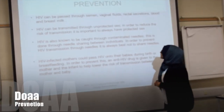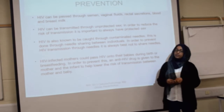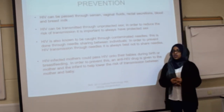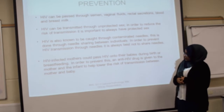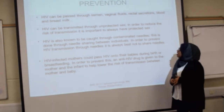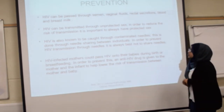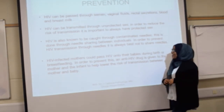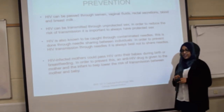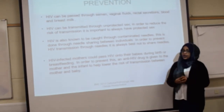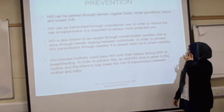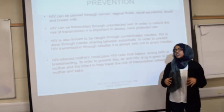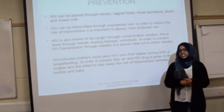HIV can be transmitted through unprotected sex, so it is important to practice protected sex to reduce transmission risk. HIV can also be transmitted through contaminated needles shared between individuals, so sharing needles should be avoided. Another route is from HIV-infected mothers, who can pass it on to their babies during birth and through breastfeeding; prevention involves using anti-HIV drugs.